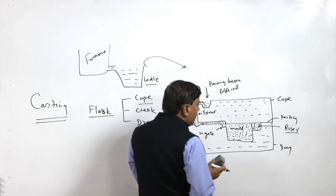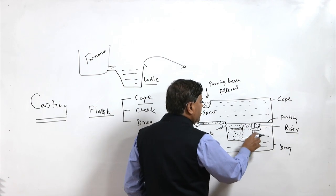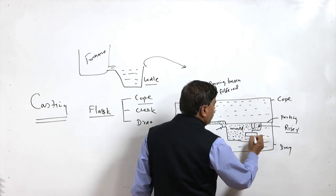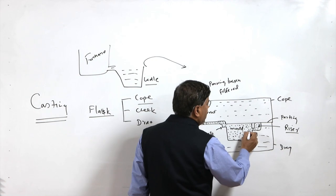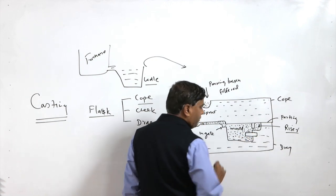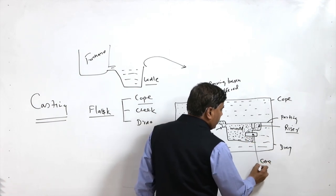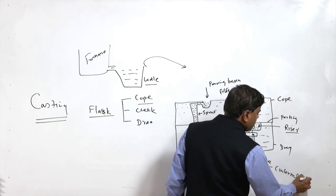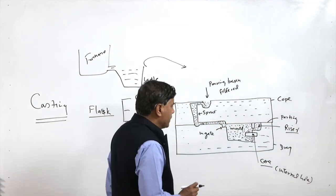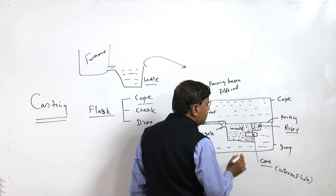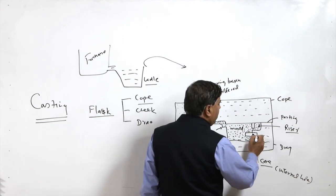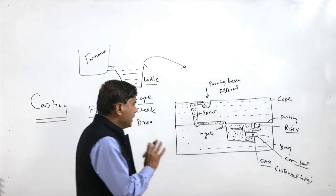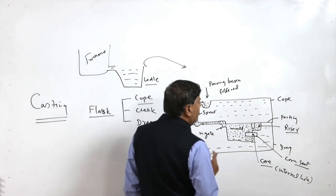If any internal cavity is to be made, a modification is made using a core. If the internal cavity of a particular shape is needed, we place a core in the mould. This is the region where molten metal will not be able to enter due to the presence of the core. This additional feature — the core — is used for generating internal holes or any other special geometry. The portion where the core is kept in the sand mould is called the core seat.